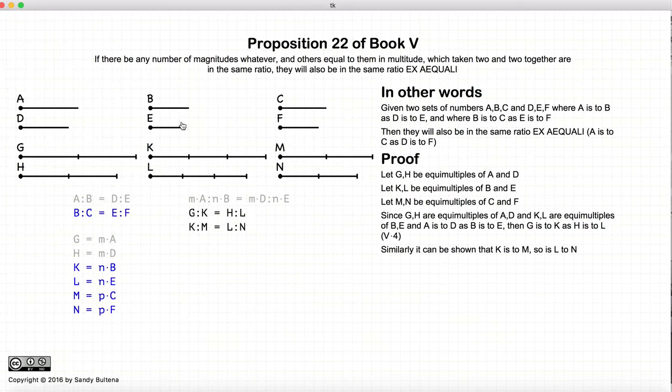Similarly, we can show that if B to C is equal to E to F, then K to M is equal to L to N.